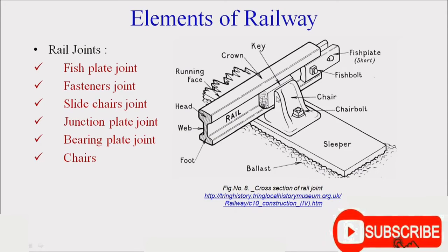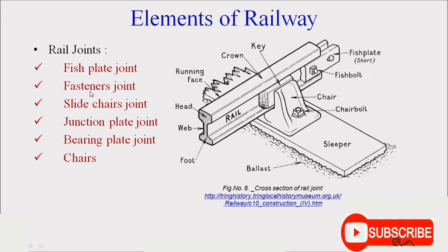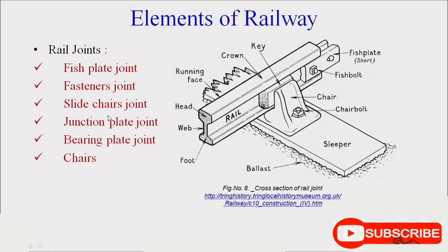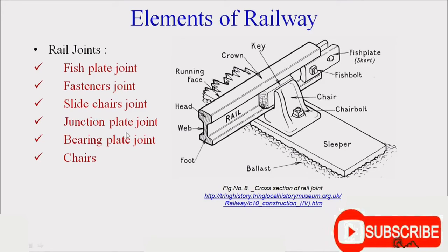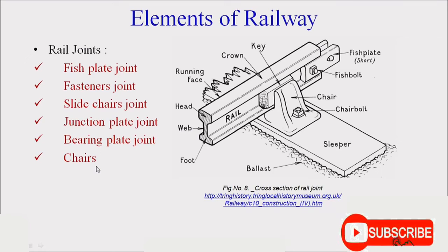Rail joints normally include fish plate joints, fish fasteners, side chairs, junction plates, bearing plates, and chairs.